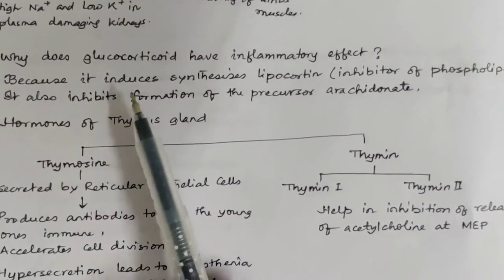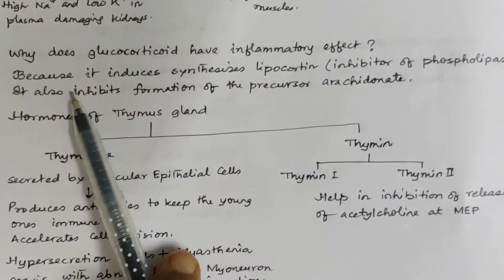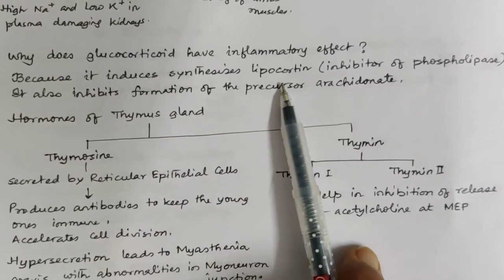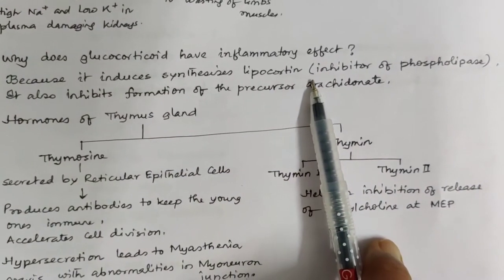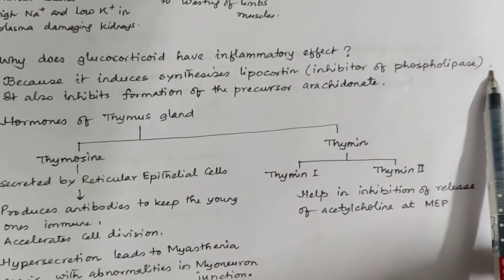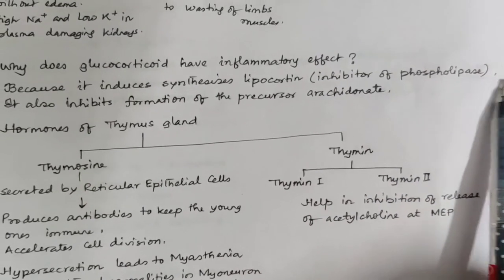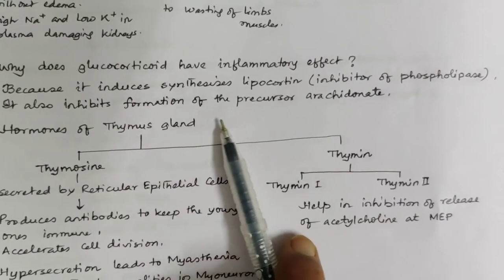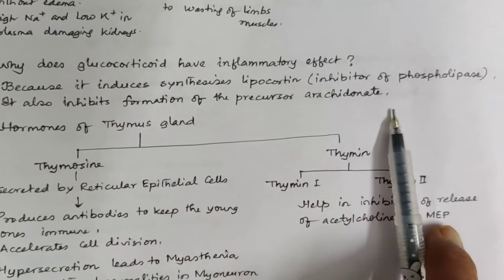Why do glucocorticoids have an anti-inflammatory effect? Because they induce synthesis of lipocortin, which is an inhibitor of phospholipase. They also inhibit formation of the precursor arachidonate.